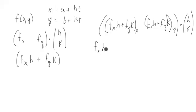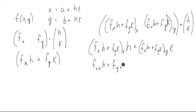Let's just write it out. We have fx h plus fy k times the derivative with respect to y, then we have a k. Then the derivatives split across the addition, so we get fxx h plus fyx k times h, plus fxy h k, plus fyy k squared.